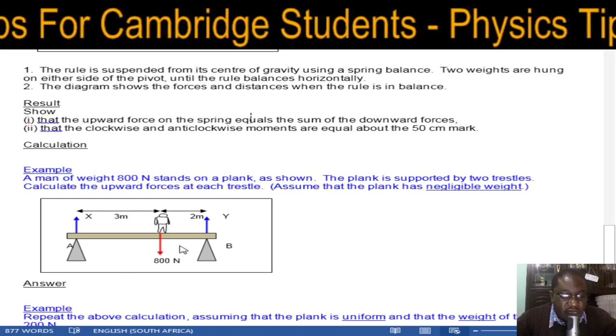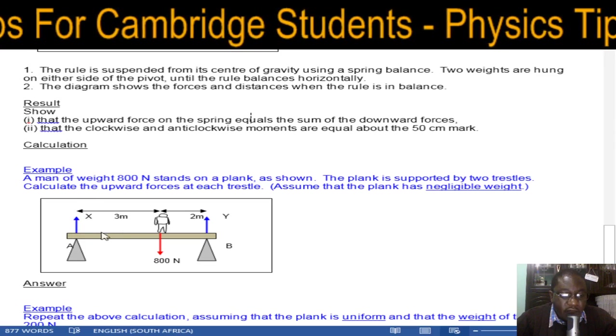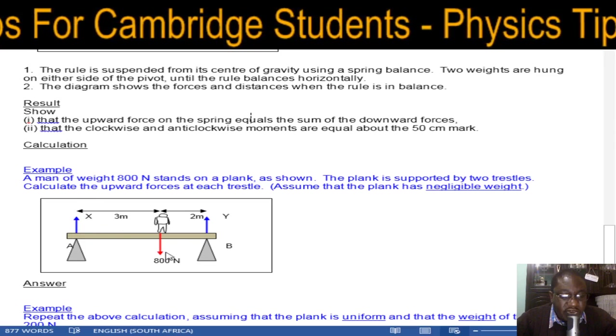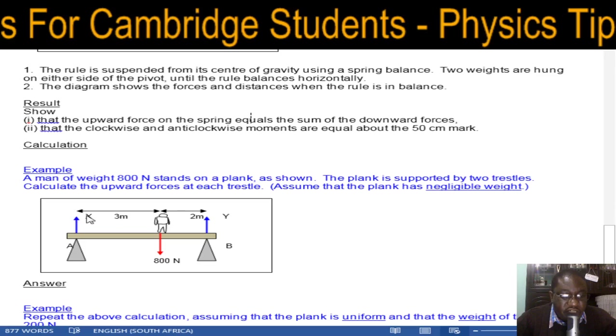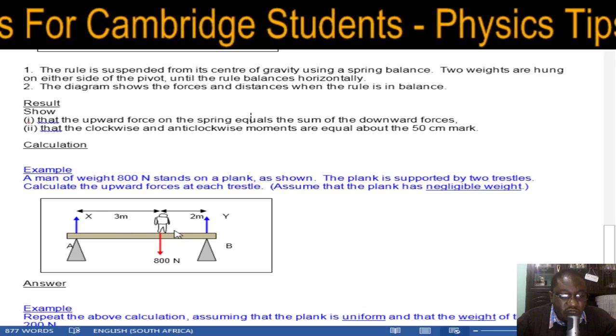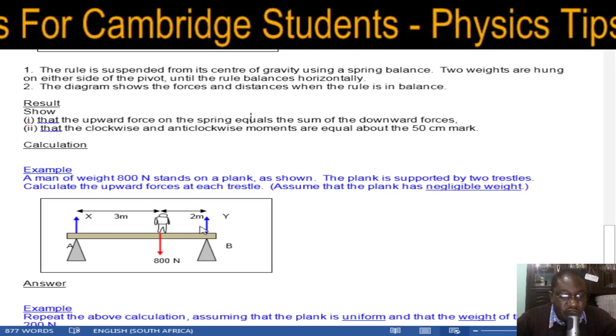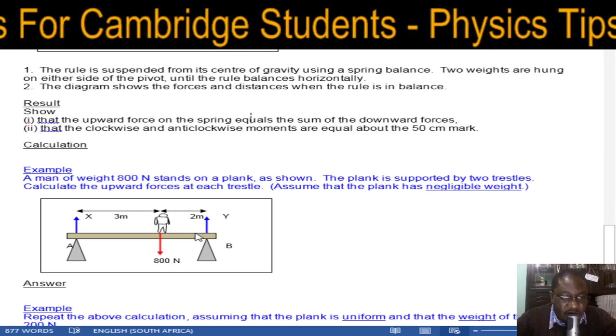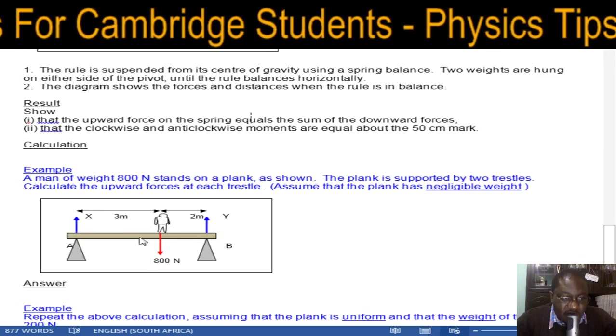X will be the force here. Since the downward force is 800 newtons, this force plus this force—upward forces should equal downward forces from the second condition of equilibrium. You then find the other force: it becomes your unknown. 800 minus this one gives you that one.